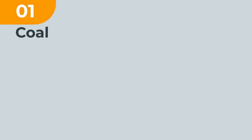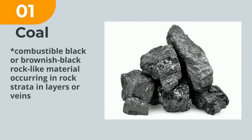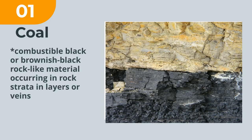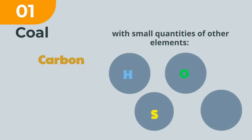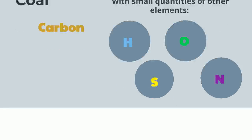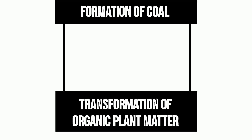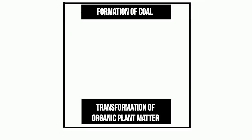Coal is a combustible black or brownish-black rock-like material, occurring in rock strata in layers or veins, called coal beds or coal seams. Coal is composed of carbon with small quantities of other elements: hydrogen, silicon, oxygen, and nitrogen. Coal started forming over 350 million years ago through the transformation of organic plant matter.